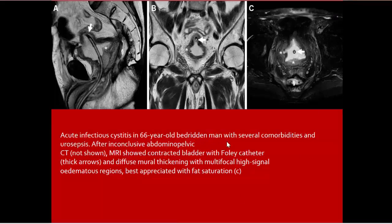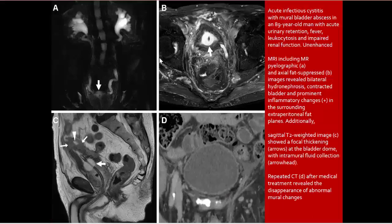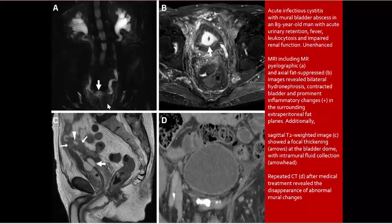Active infectious cystitis in a man with several microbes, urosepsis. Contracted bladder with Foley catheter, diffuse mural thickening, multifocal high signal thickening, edematous region best appreciated on fat saturation. Mural bladder abscess on MRI with fat-suppressed sequences shows bilateral hydronephrosis, contracted bladder, prominent inflammatory changes surrounding extravesical fat. Additional sagittal T2 shows focal thickening, intramural fluid collections. Medical treatment resolves the appearance of abnormal mural changes.